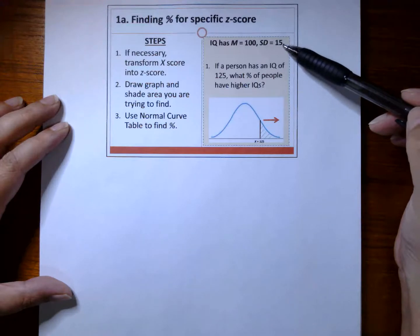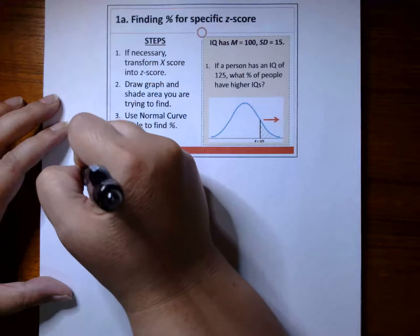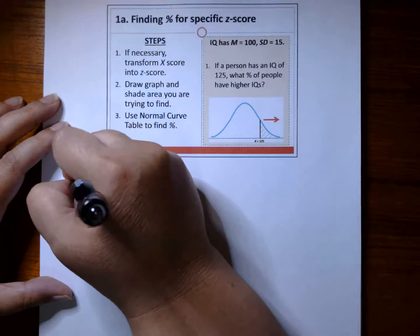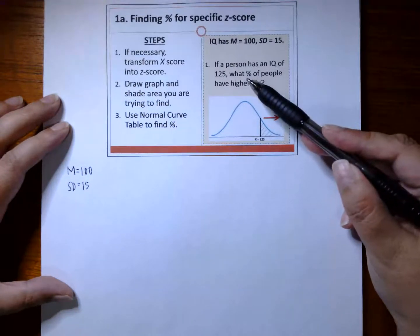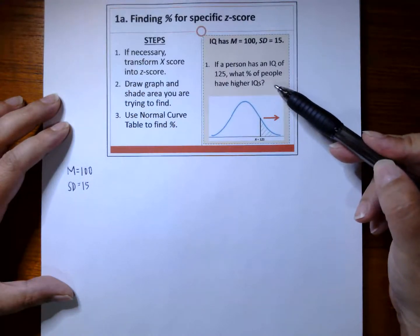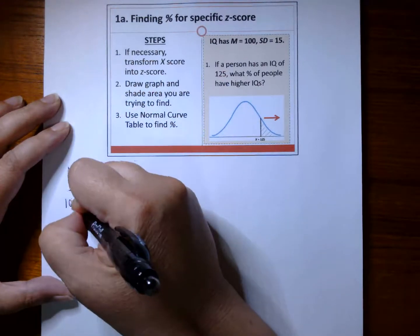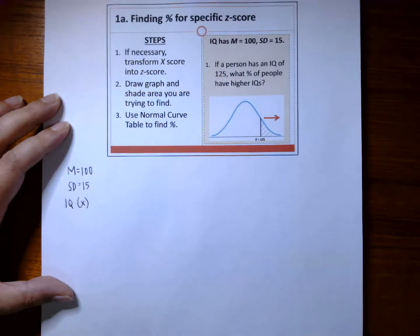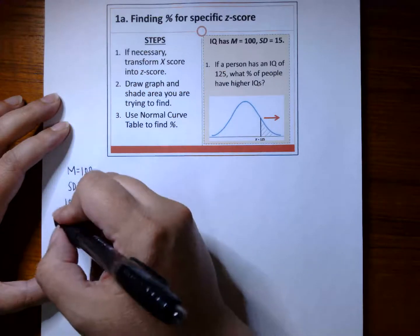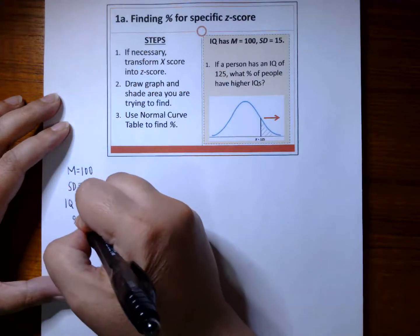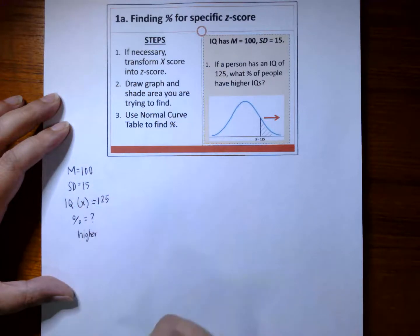As stated in an earlier video with word problems, I want you to list the key values or concepts first to simplify and solve. In this equation, IQ has a mean of 100 and an SD of 15. If a person has an IQ of 125, what percentage of people have higher IQs? In other words, they are looking for the x-score, which is 125.